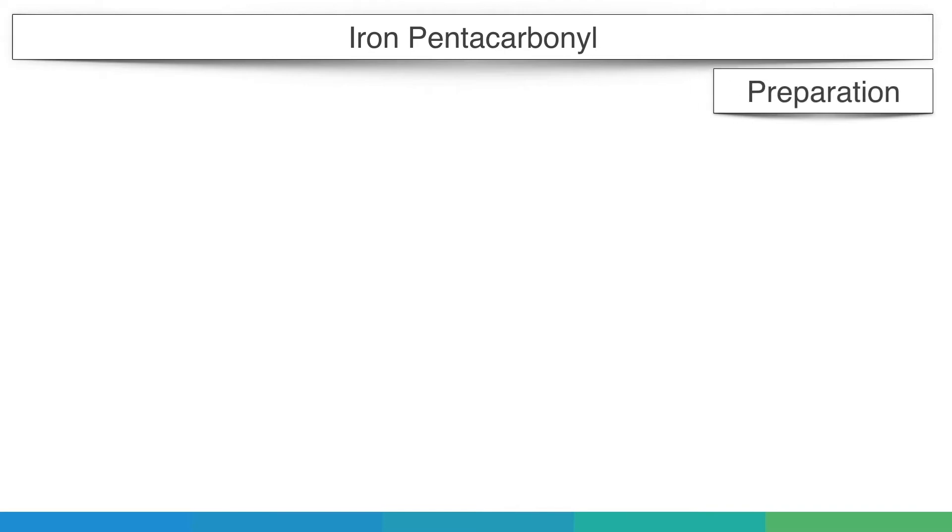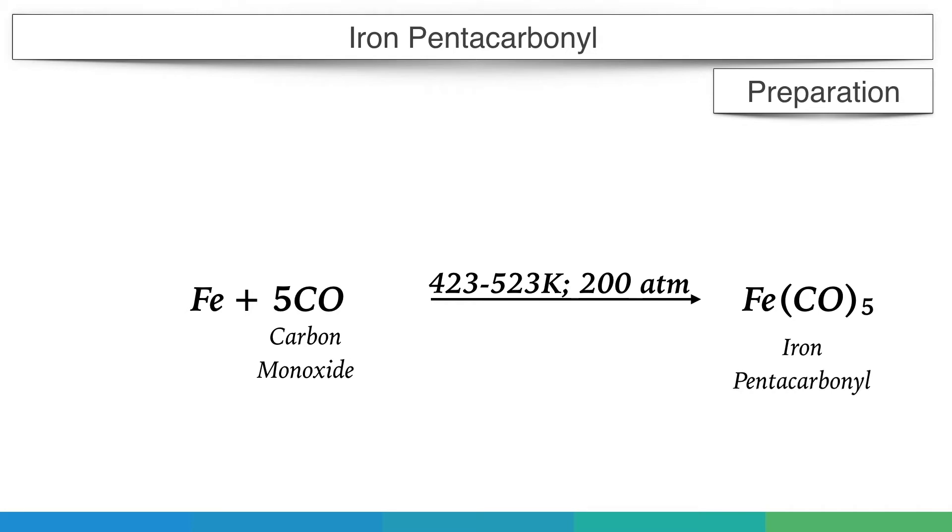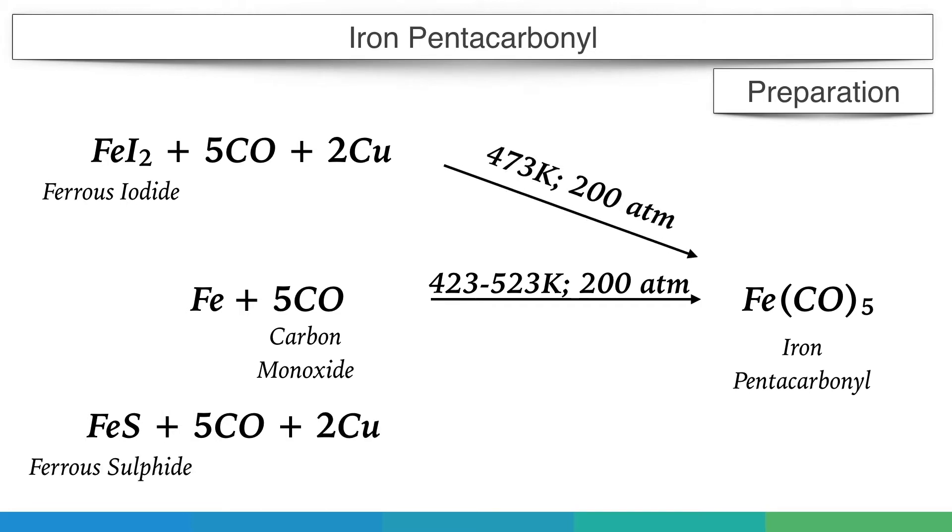Preparation. Iron pentacarbonyl is prepared by the action of carbon monoxide on finely divided iron at 423 to 523 degree Kelvin and 200 atmospheric pressure. It can also be prepared by the action of carbon monoxide on ferrous sulfide or ferrous iodide at 473 degree Kelvin and 200 atmospheric pressure in the presence of copper, which acts as a reducing agent.